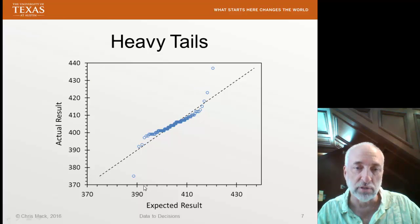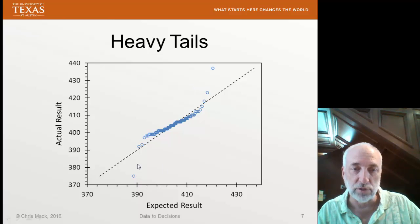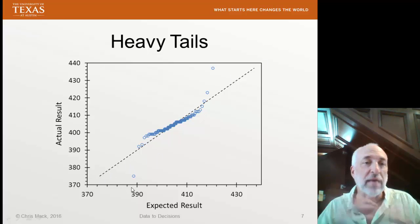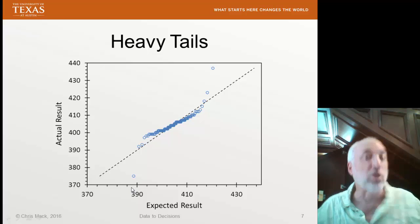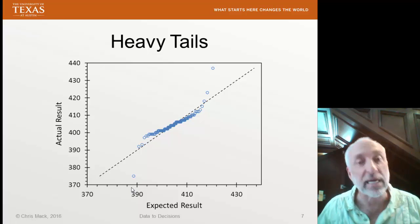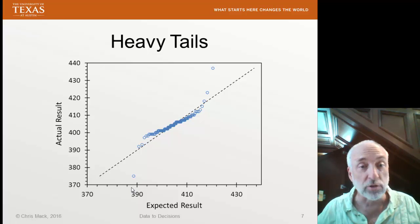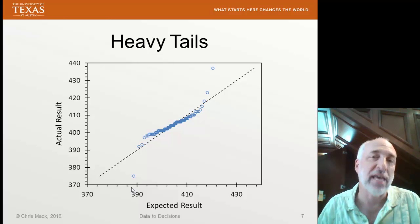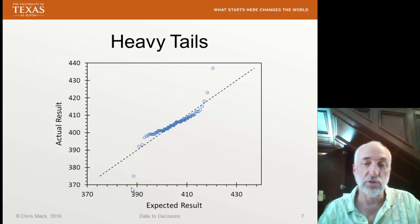If my expected result is, say, 390, my actual result is smaller than this line. And that means the actual results are more extreme than my expected results. When the actual results are more extreme than the expected results, then we know we have heavy tails in our distribution.